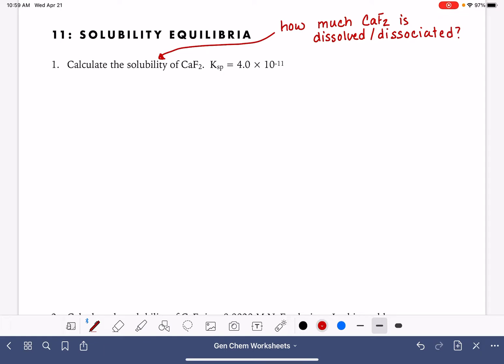There are two different types or two different ways that we tabulate solubility. We have solubility, like this problem is asking. We also have something called molar solubility. We do have to be a little bit careful, pay attention to what the problem is asking us to solve. Solubility is in units of grams per liter. Molar solubility is in units of moles per liter.